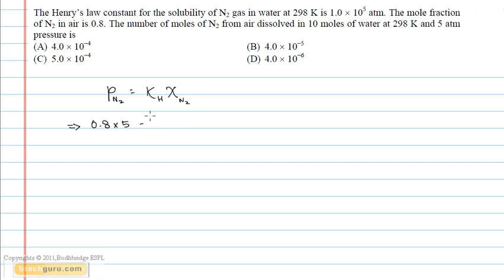Now, putting the values for KH and mole fraction of N2 in water, we get KH is given as 1.0 into 10 to the power 5 atm into the mole fraction of nitrogen in 10 moles of water.